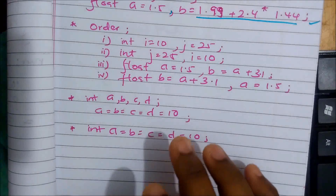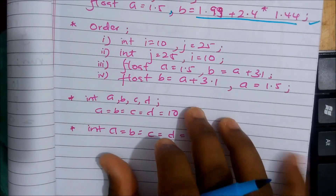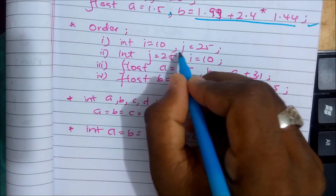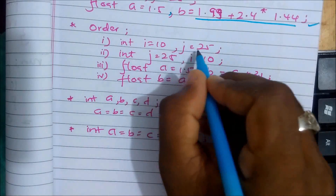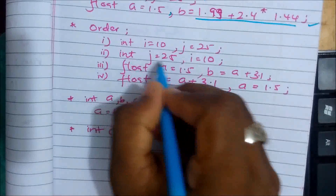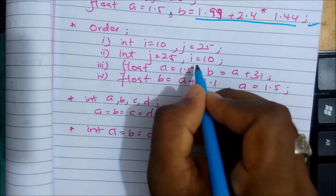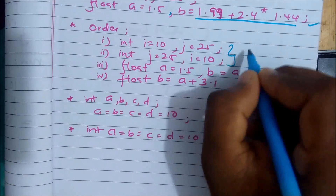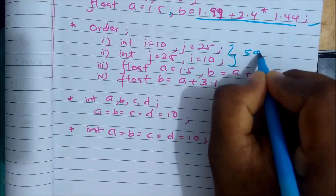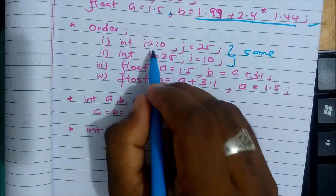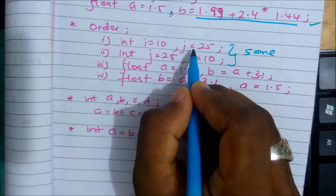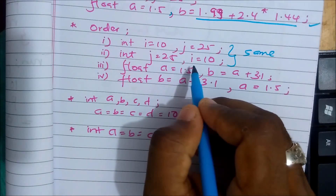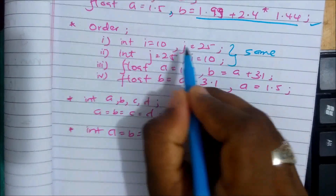We will initialize the same thing. We will make: int i equal 10, j equal 25. We will initialize the same thing and show the same thing.